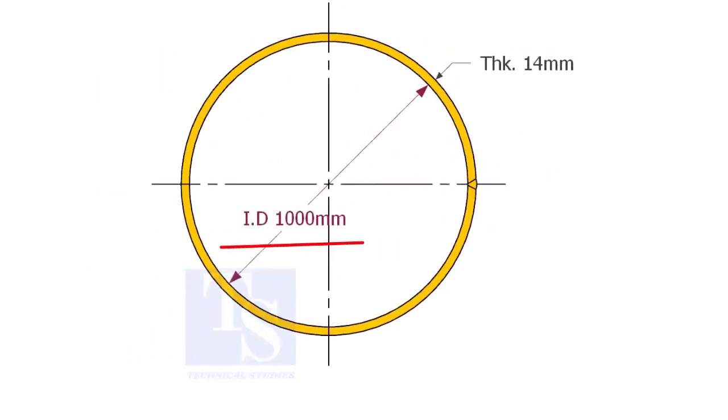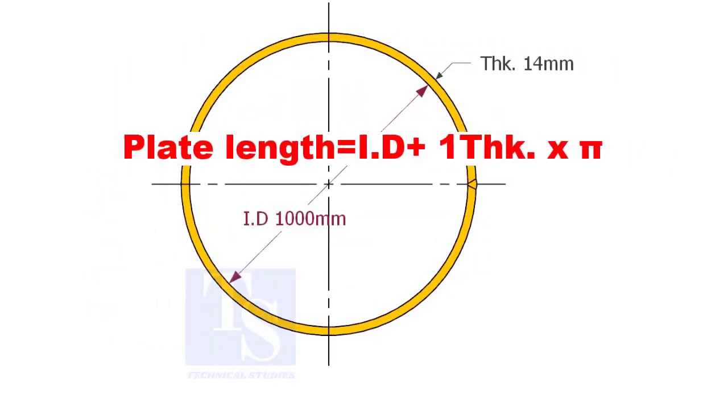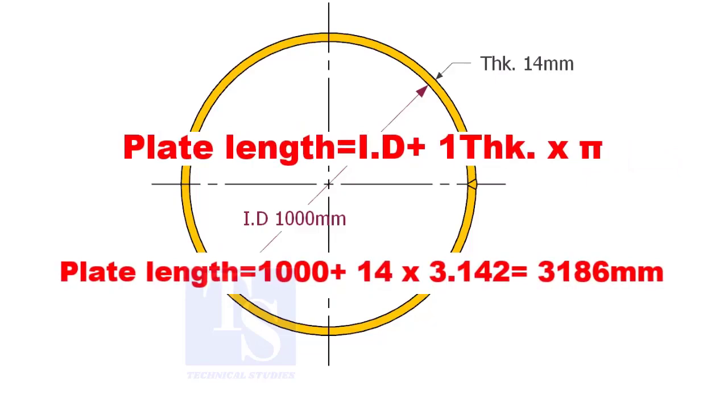Assume that the ID of the pipe is 1000 mm and the thickness is 14 mm. Then add one thickness to the ID and multiply with pi.